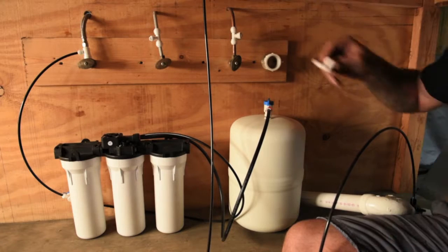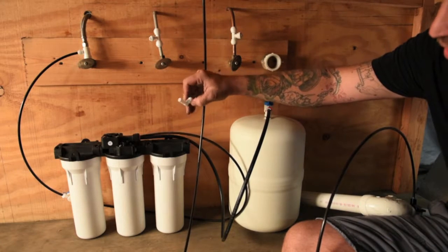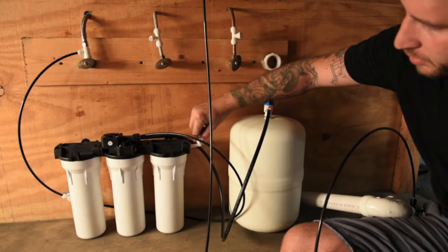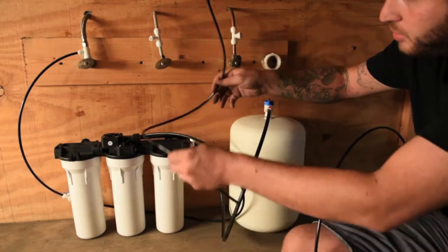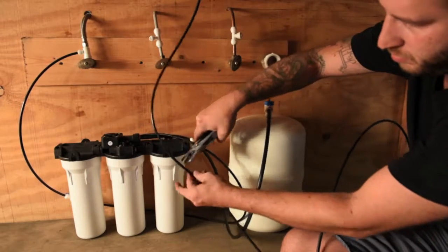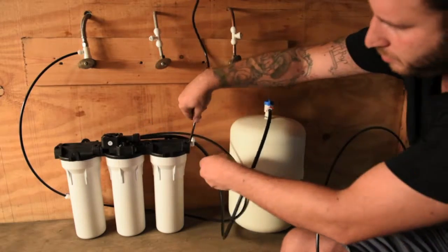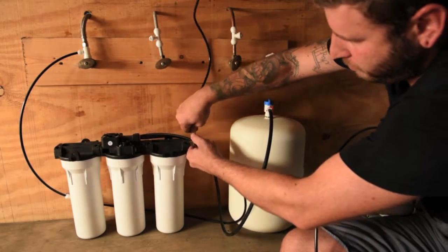The system comes with the in and outs at three-eighths of an inch, so a reducer is needed. Place the three-eighths to quarter-inch reducer into the system, and then cut your polyline to size. Place the faucet line into the out.